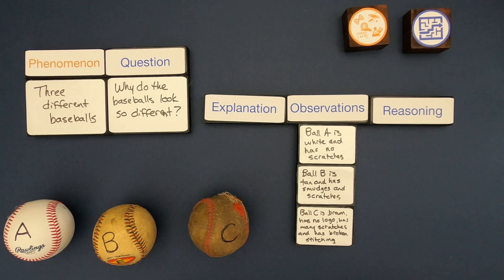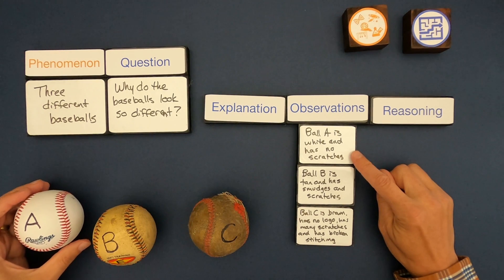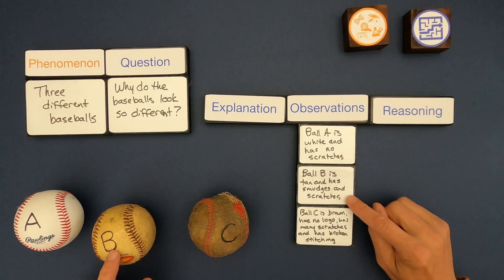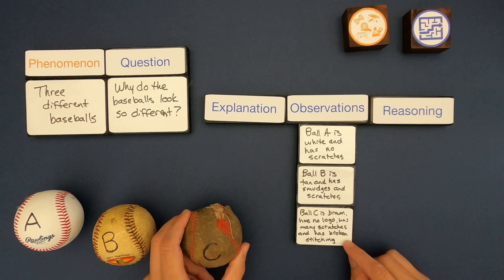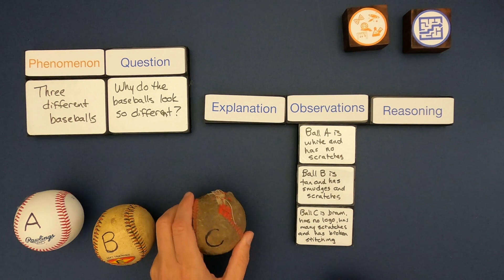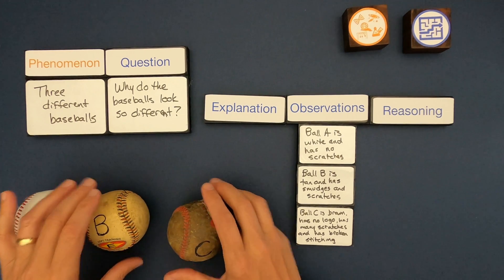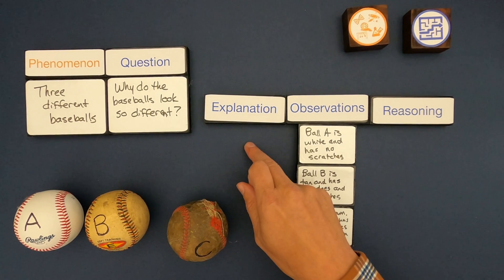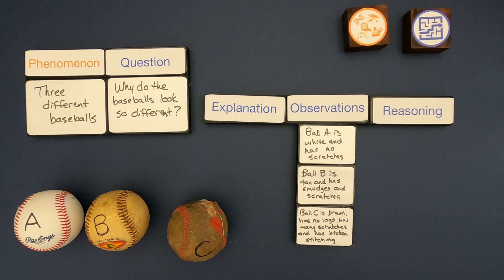The observations I wrote: Ball A is white and has no scratches. Ball B is tan and has smudges and scratches. Ball C is brown, doesn't have a logo on it, has many scratches, and also has some broken stitching. Now that I've made a bunch of observations, the next thing I want to do is come up with an explanation that tells me why the baseballs look so different.